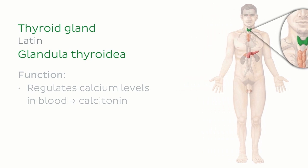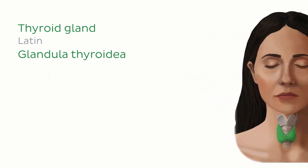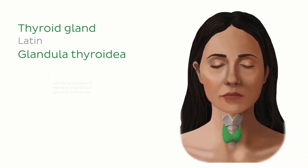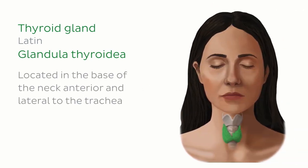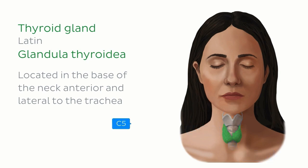The thyroid gland is located at the base of the neck, just anterior and lateral to the trachea, and inferior to the larynx. It spans from approximately the level of C5 to T1.